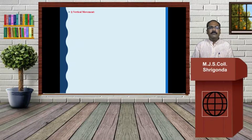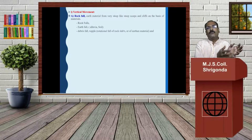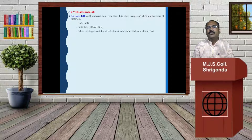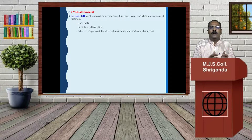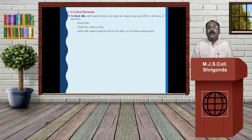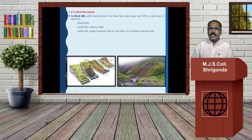Then the vertical movements: rock falls, earth material falls, earth falls, debris falls. On top of this material, rotational falls of rock, slab, or earthen materials — the material comes to the mountain foot.